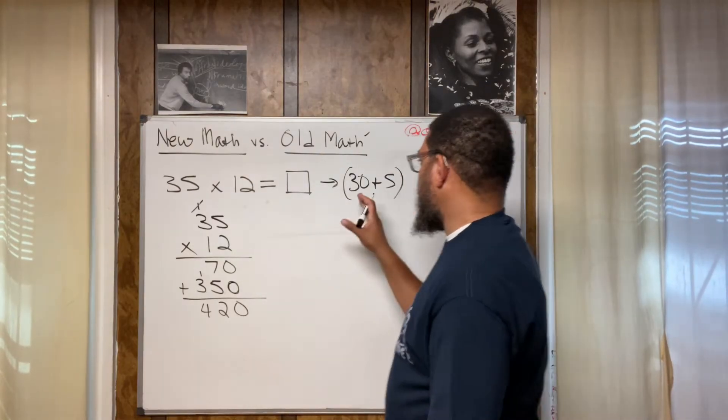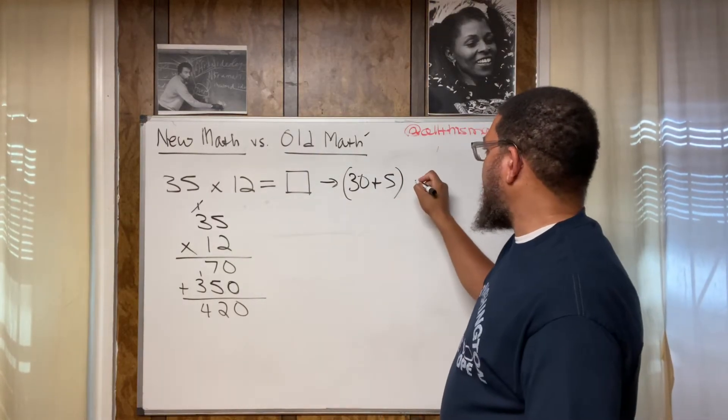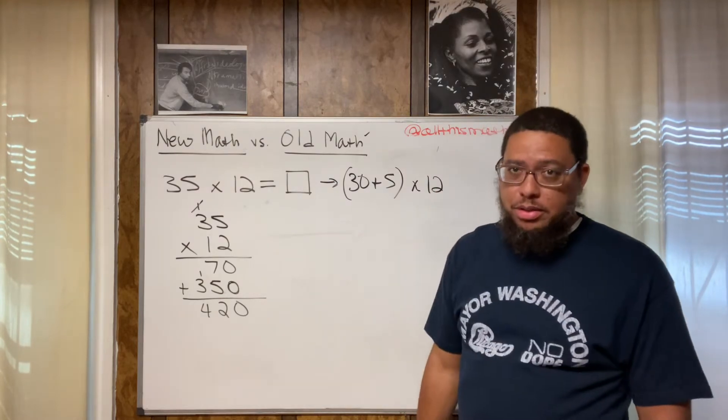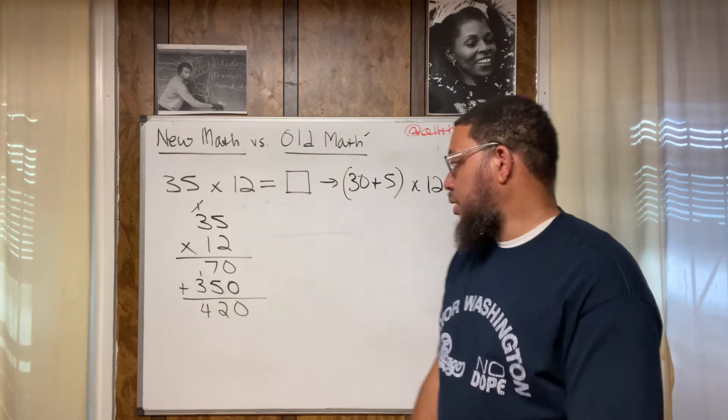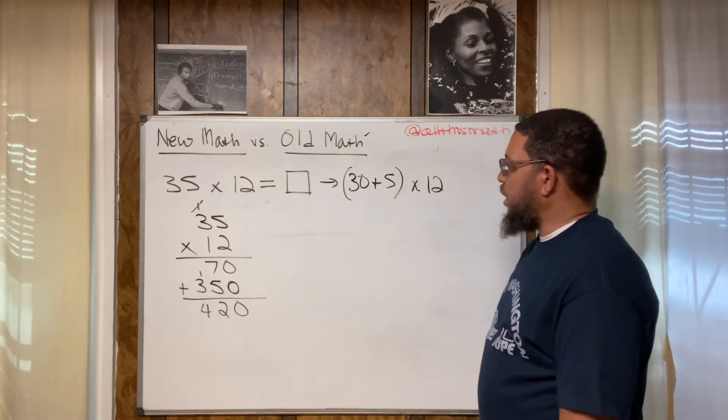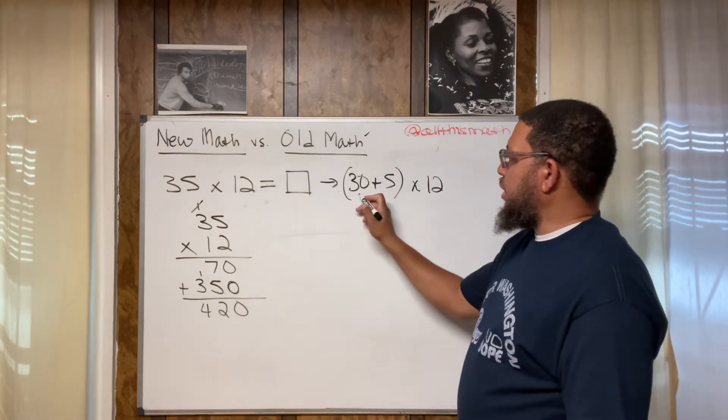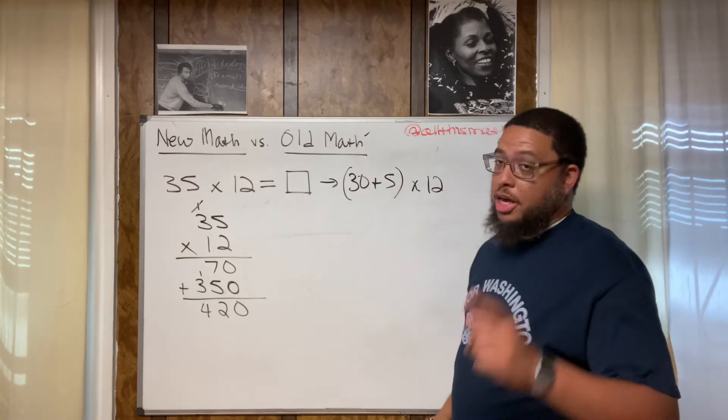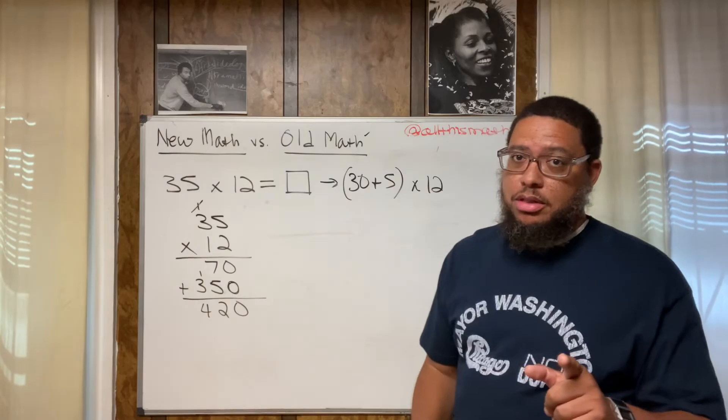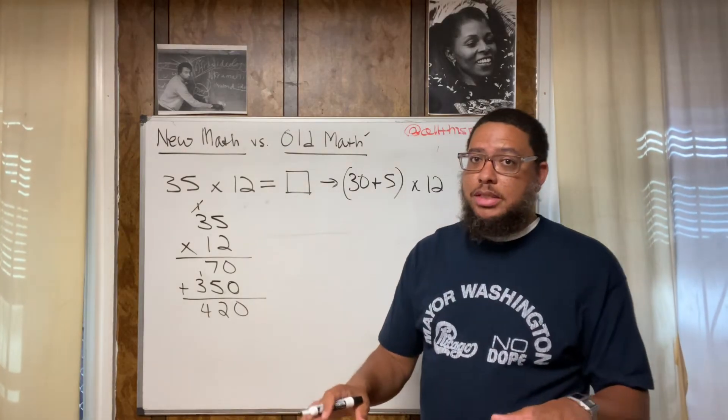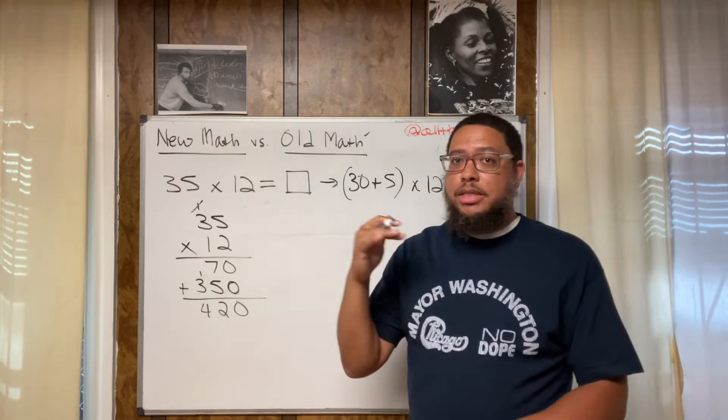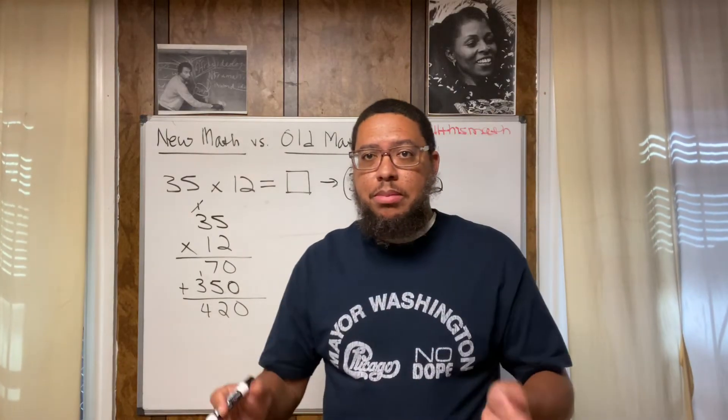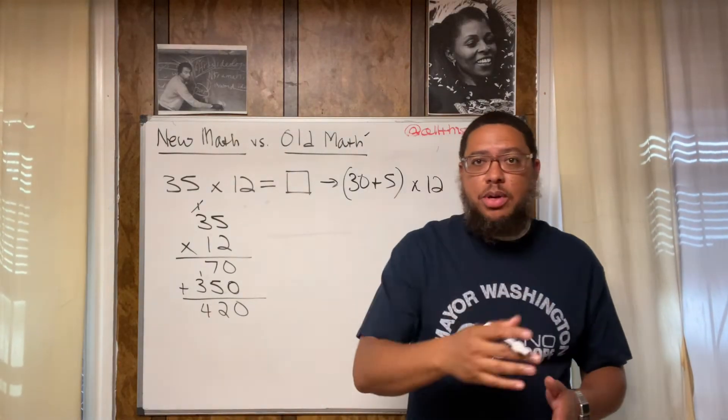So the 35 breaks down into 30 plus five, and then it's still multiplying by 12. So now we use something called the distributive property. What the distributive property says is that every number inside the parentheses gets multiplied by this number outside. So this is going to be easier mental math if you know your multiplication facts. If you don't have your multiplication facts memorized, this is going to be difficult. That's why I tell people, I scream from the rooftops.